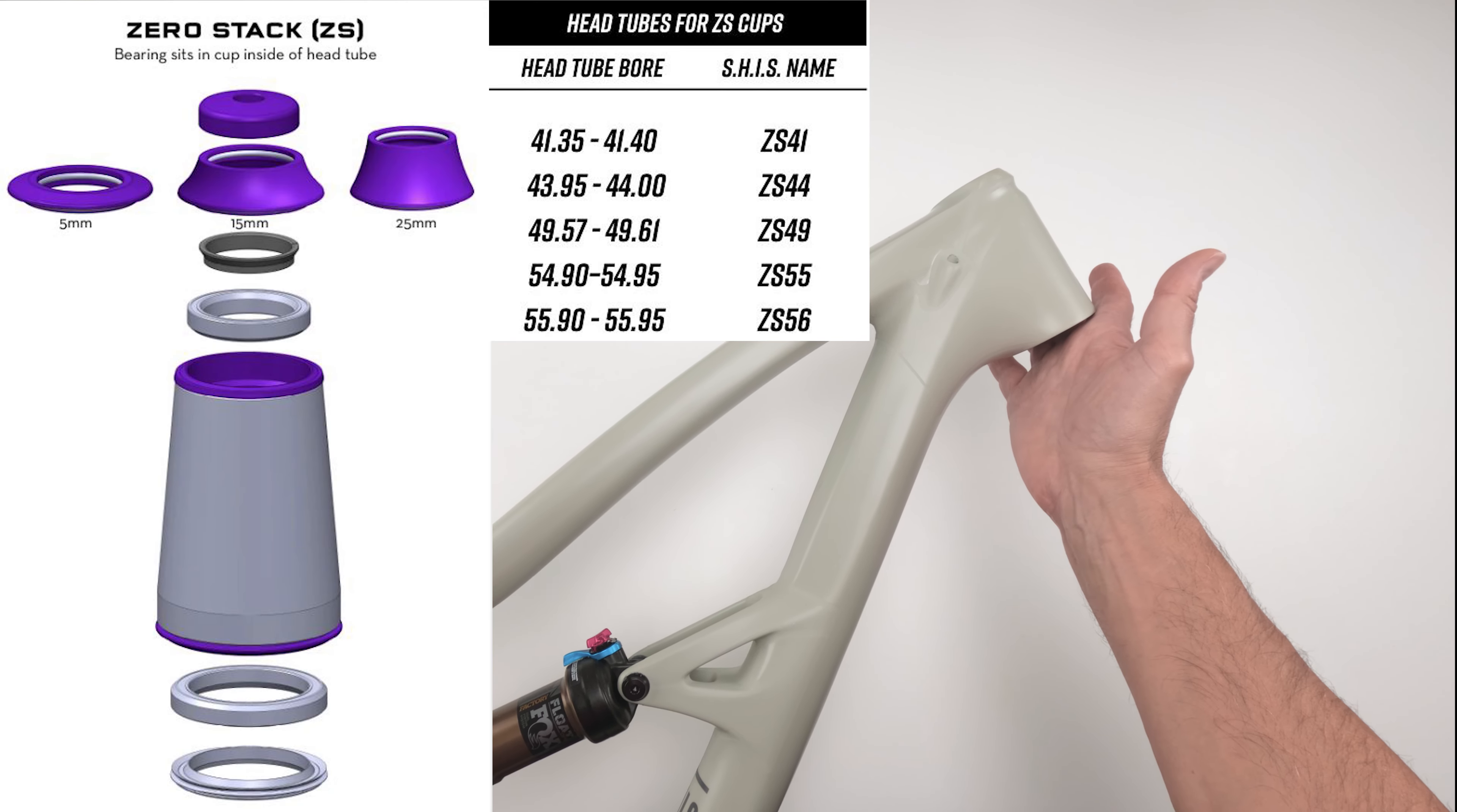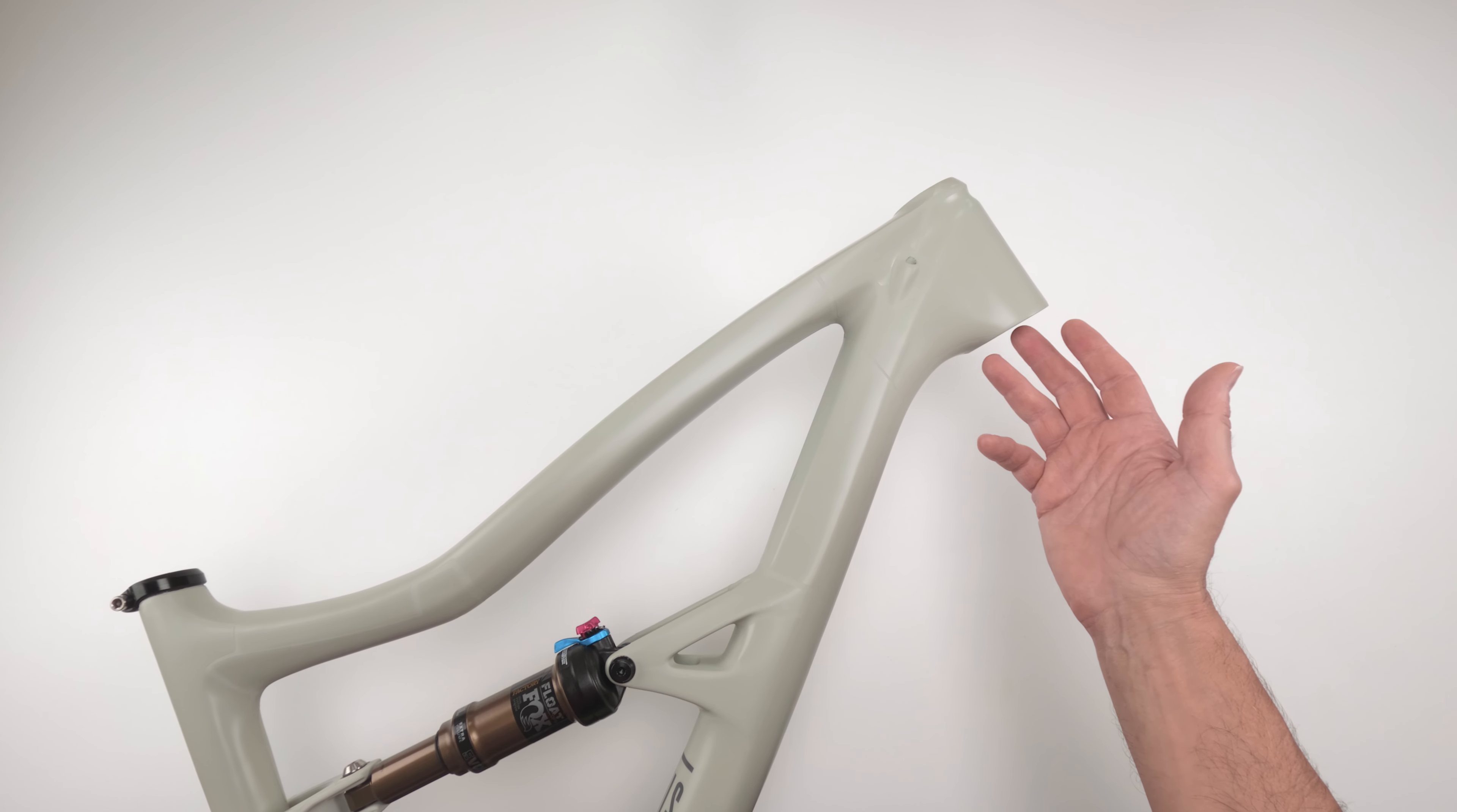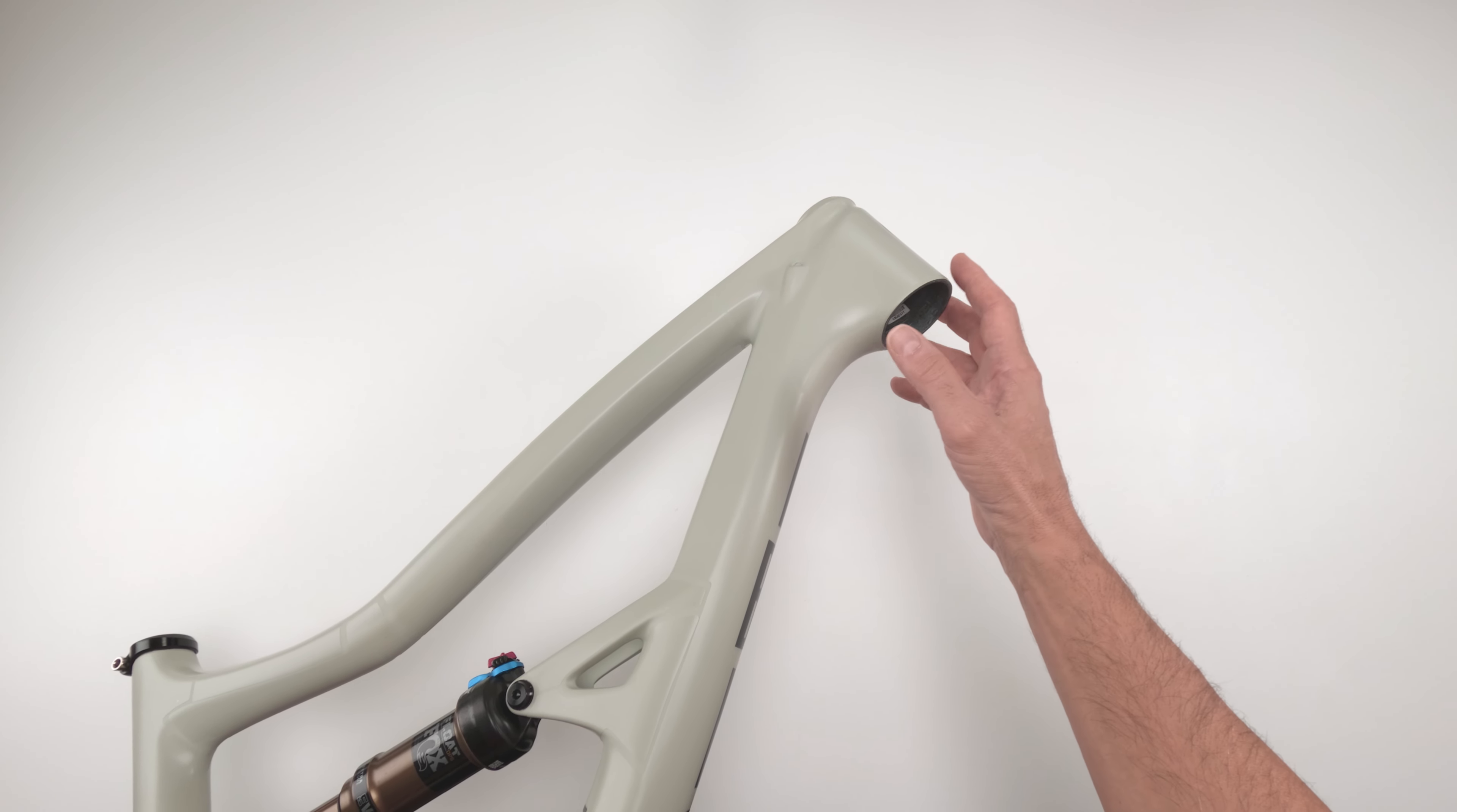And then they came up with zero stack, which is what this one is. In other words, there is a cup that presses into the frame, but you do not see the cup, you only see the rim. And the third one is integrated stack. There is no cup, it's all essentially molded into the actual frame. So you don't need a cup. You save some weight.